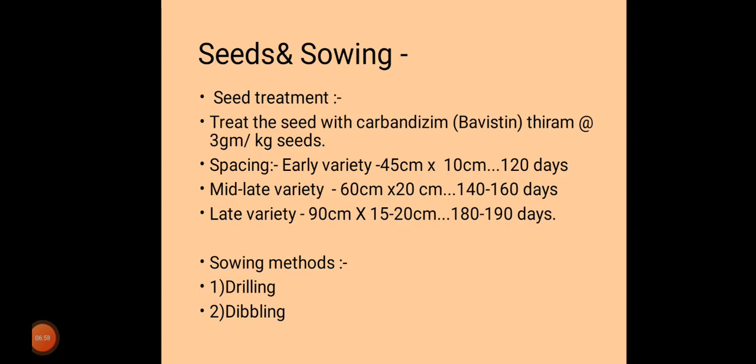After preparatory tillage, regarding seeds and sowing — seed treatment should be done with carbendazim, bavistin, or thiram at the rate of 3 grams per kg of seeds. Spacing varies by variety type. For early varieties, spacing is 45 centimeters between two rows and 10 centimeters between plants (45 × 10 cm). Early varieties complete their life cycle within 120 days.